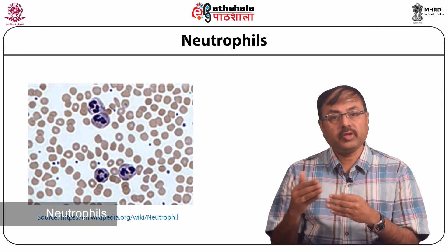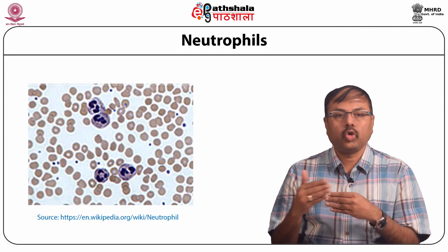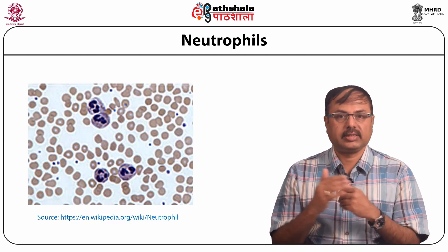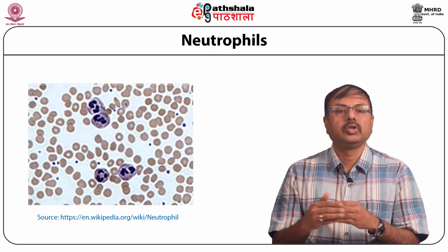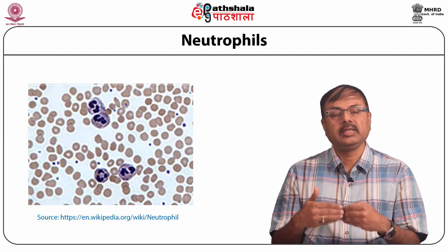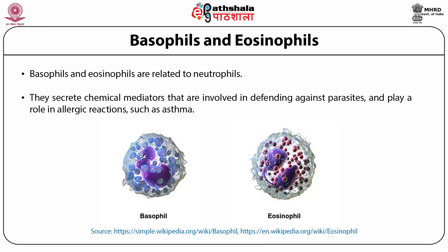Neutrophils are phagocytes that travel throughout the body. These cells are normally found in the bloodstream and are the most abundant type of phagocyte. During the acute phase of inflammation, neutrophils migrate towards the site of inflammation and are usually the first cells to arrive at the scene of infection. Basophils and eosinophils are related to neutrophils. They secrete chemical mediators involved in defending against parasites and play a role in allergic reactions such as asthma.